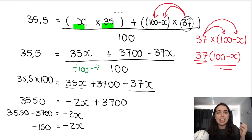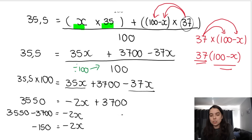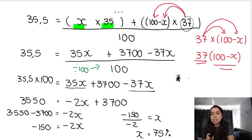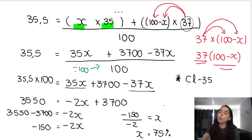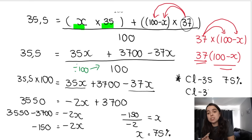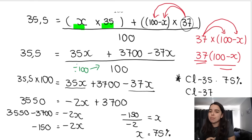Now divide both sides by negative 2. Negative 150 divided by negative 2 gives x equals 75%. So Cl-35 has a percentage abundance of 75%. If the question also asked for Cl-37, remember we said that was 100 minus x, so 100 minus 75 equals 25%. This makes sense because 75 plus 25 equals 100%.